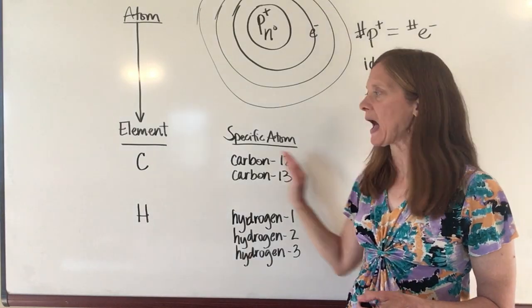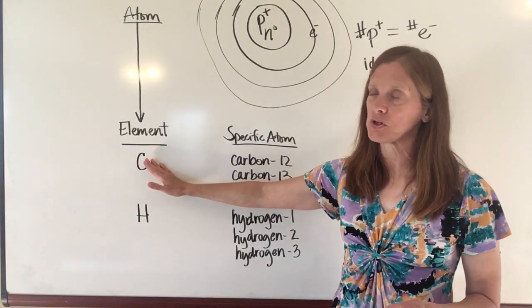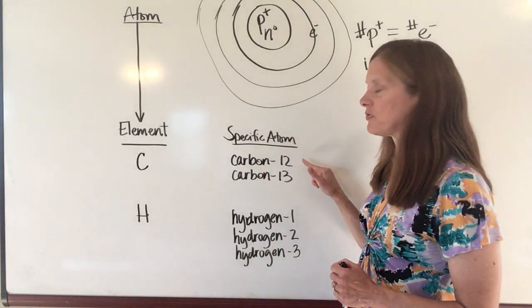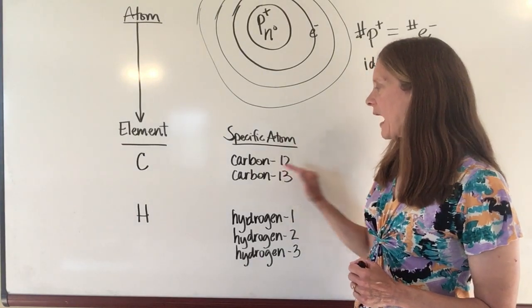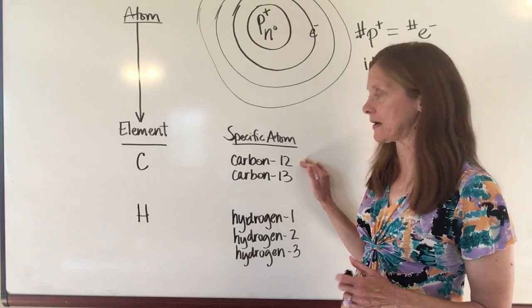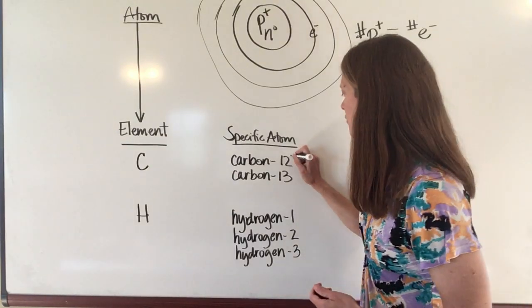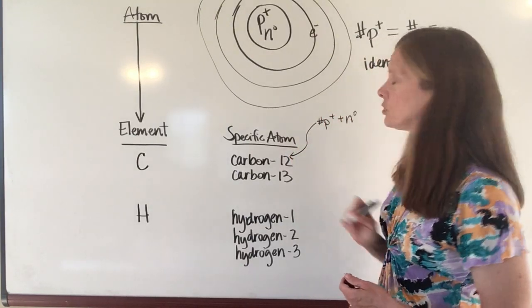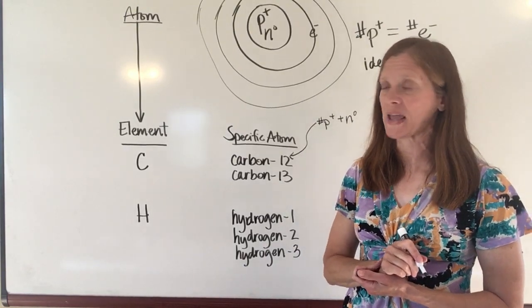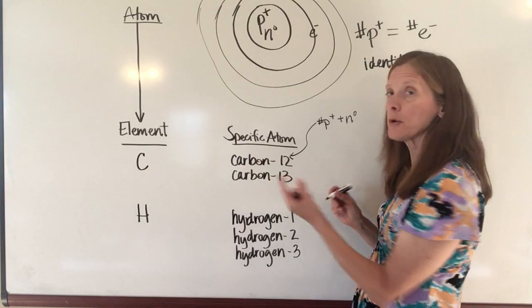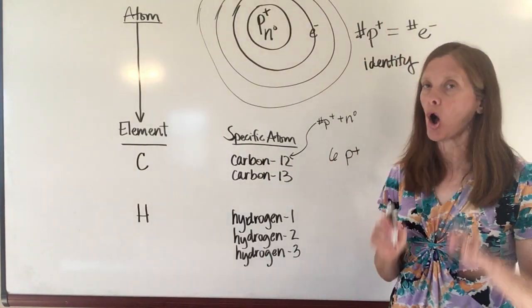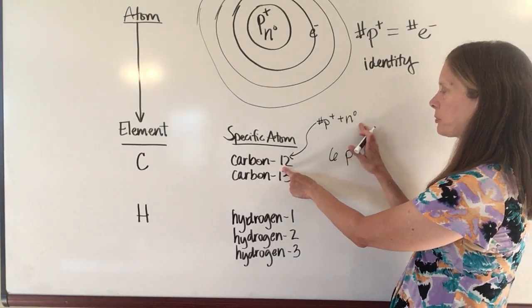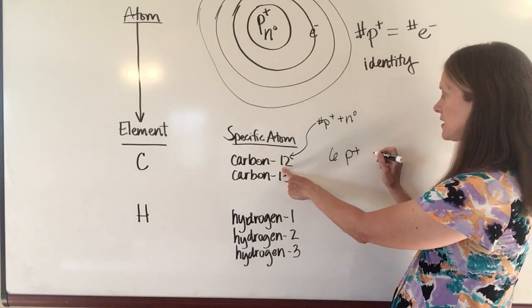However, some of these specific atoms within the element may have different numbers of neutrons, and you can tell how many neutrons they have when we write the name of the atom this way. Most atoms that are naturally occurring are carbon-12 atoms, and what that means is that this number right here is the number of protons plus the number of neutrons that are in the nucleus of that specific atom. As I told you before, carbon always has six protons in it—that's always true for carbon. But this 12 is the number of protons plus neutrons, so as six of them are protons, that means that the other six then are going to be neutrons.